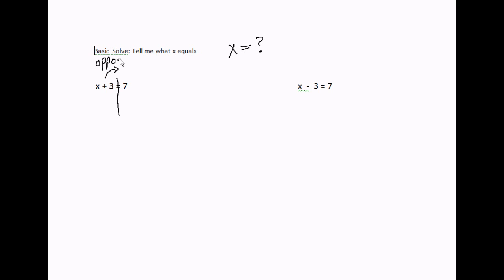Here's my equal sign. I have this three over here and I need to get the three to the other side. The way we do this — we always do the opposite math. Now some of you just looking at this can tell me x equals four, because four plus three equals seven, but this is how we do it mathematically. We're going to do the opposite math. What is the three doing? It's adding. The opposite of adding three...